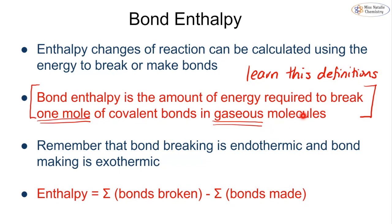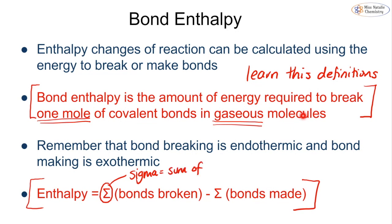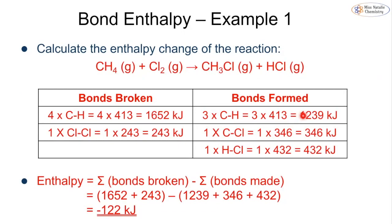The equation we use is: the enthalpy change of the reaction overall is the sum (sigma) of the energy to break all bonds, minus the sum of the energy of all bonds that are made. You won't need to memorise bond enthalpy values — you will always be given the information in a table in a past paper question, as we'll see shortly.